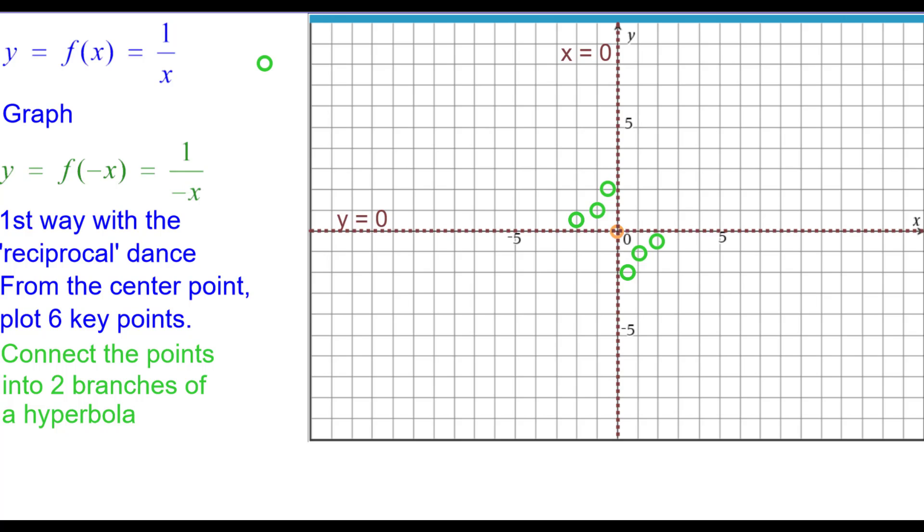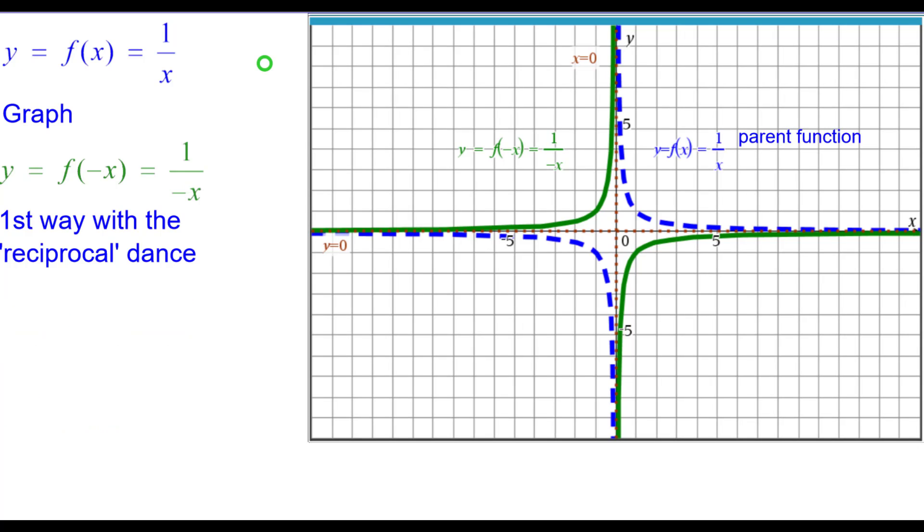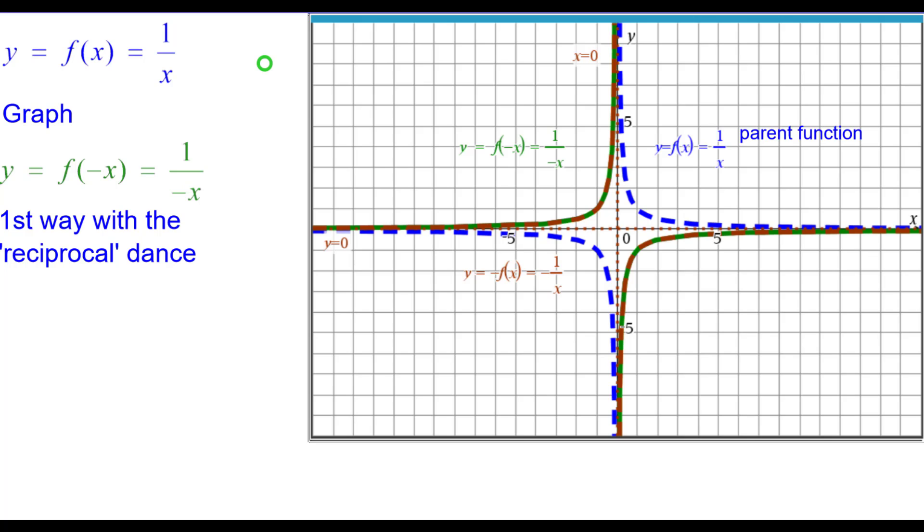We'll connect the points with two branches of hyperbola. So there's our graph. Comparing that to the parent function, you can see that those two functions are not the same. So this function is not even. If we look at y equals the opposite of f of x, which is negative one over x, you can see that f of opposite of x and the opposite of f of x are identical. And that means that the one over x function is an odd function.